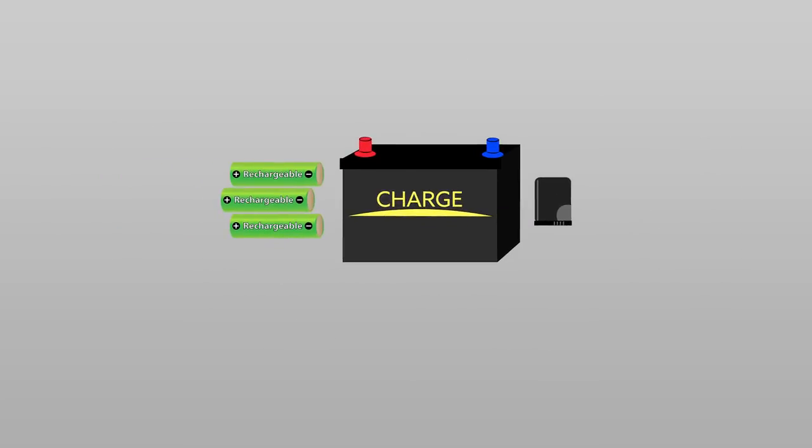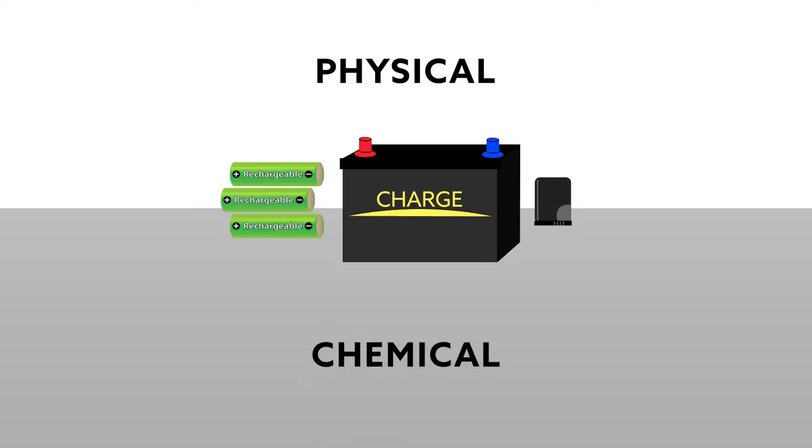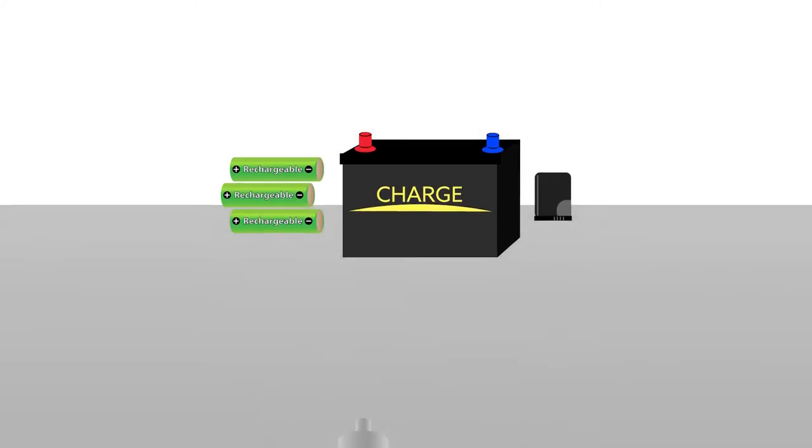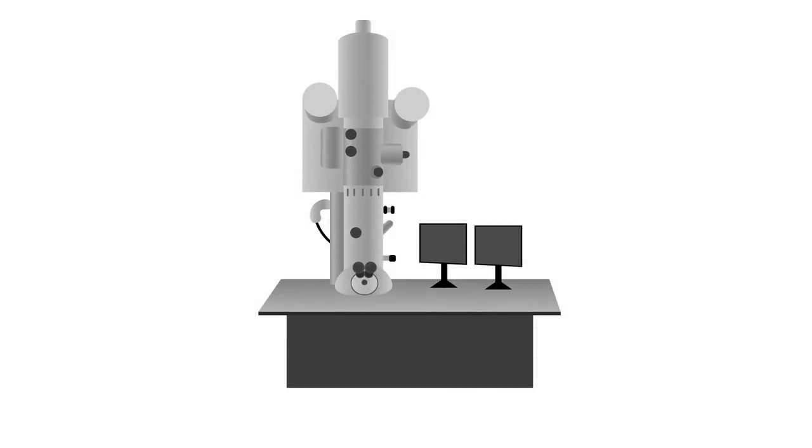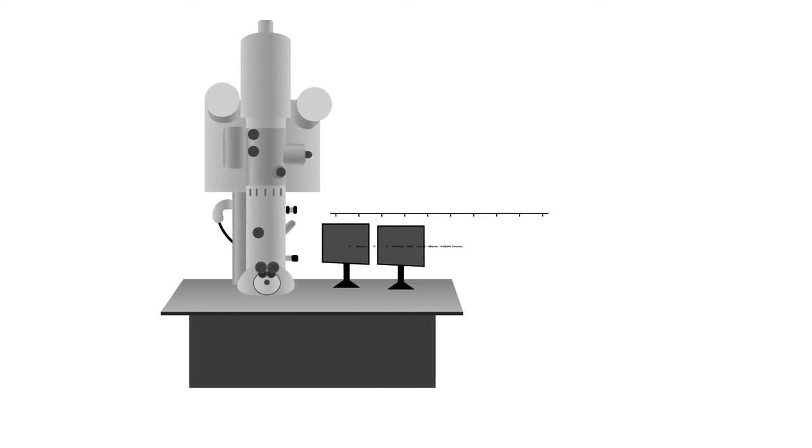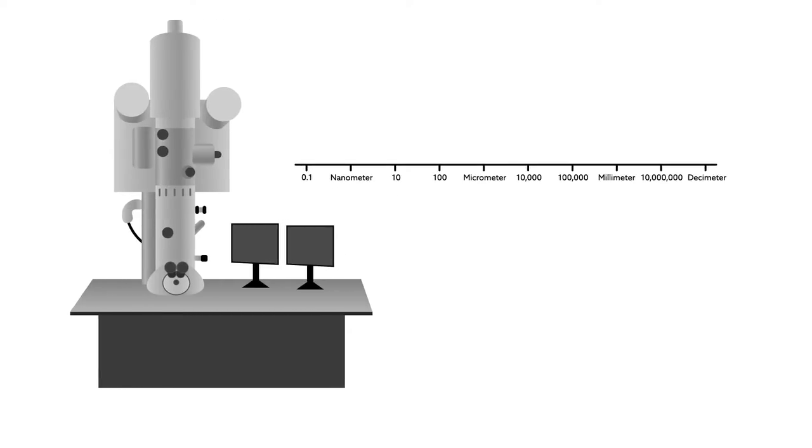Even as battery technology has matured, however, the physical and chemical processes that unfold inside of a battery as it delivers power have remained largely hidden from view. But thanks to advancements in electron microscopy and methods for handling materials on the nanoscale, scientists and engineers now have front row seats to the action.